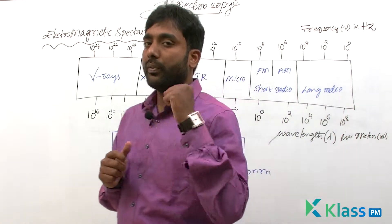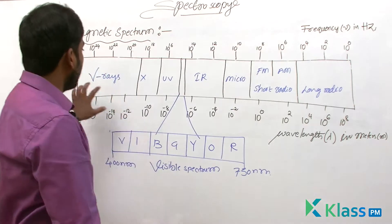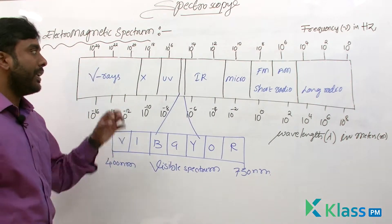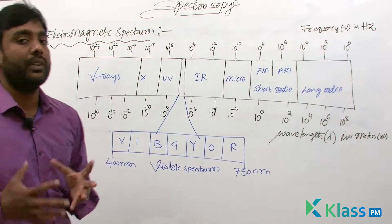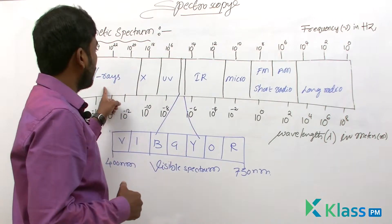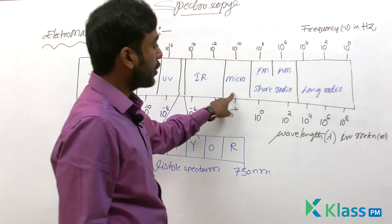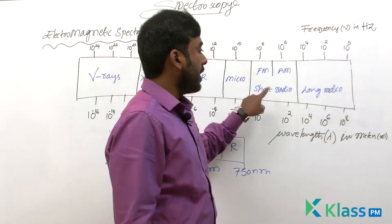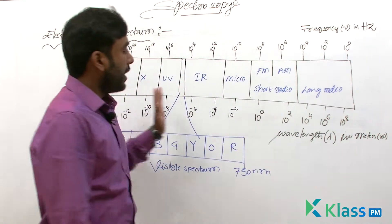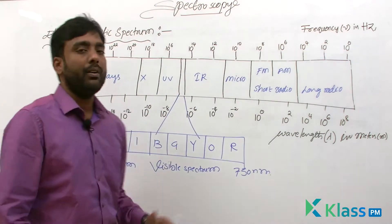Wavelength and frequency are inversely related. That's why gamma rays have very low wavelength and high frequency, and that's why they possess highly energy. Going further — X rays, UV rays, infrared rays, microwaves, short radio waves, and long radio waves — these keep on decreasing in their frequencies and increasing in their wavelengths.